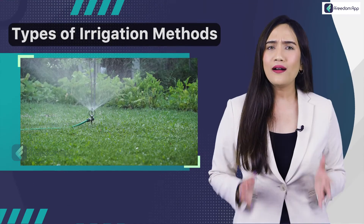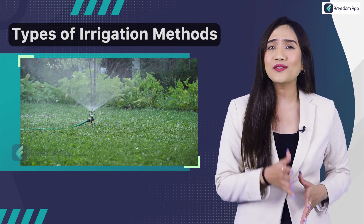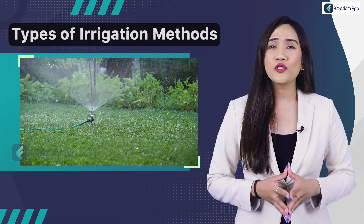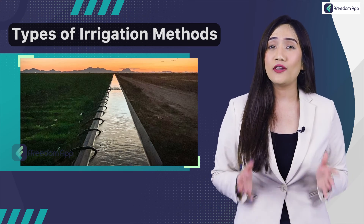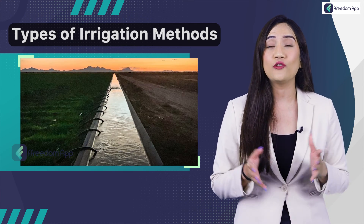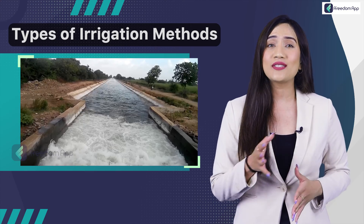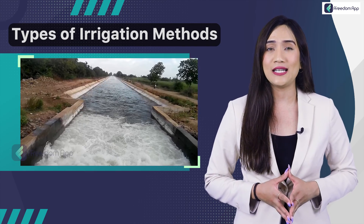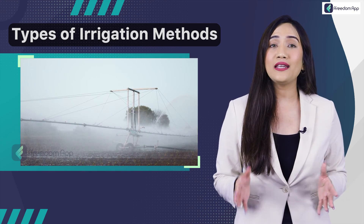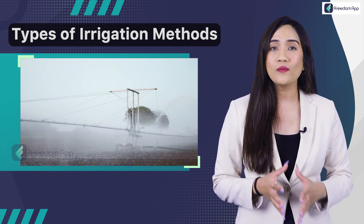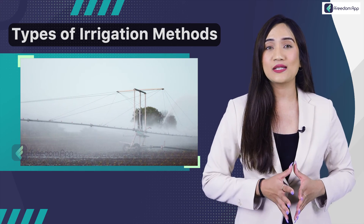The earliest form of irrigation probably involved people carrying buckets of water from wells or rivers to pour on their crops. As better techniques developed, societies in Egypt and China built irrigation canals, dams, dikes, and water storage facilities. Ancient Rome built structures called aqueducts to carry water from snowmelt in the Alps to cities and towns in the valleys below.